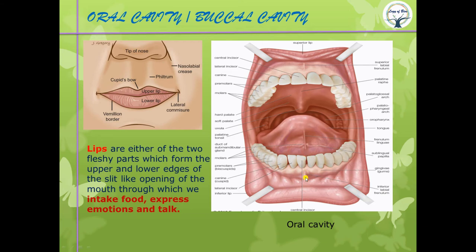The inferior labial frenulum is a fold of mucous membrane holding the lower lip to the gum. The superior labial frenulum holds the upper lip to the gum. The lingual frenulum holds the tongue to the base of the mouth. A frenulum is a fold of mucous membrane.